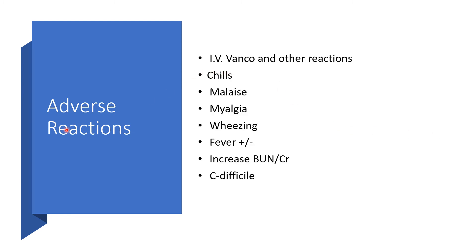Other adverse reactions from intravenous vancomycin include chills, malaise, myalgia, wheezing with or without fever, increased blood urea nitrogen and creatinine, and Clostridioides difficile colitis.